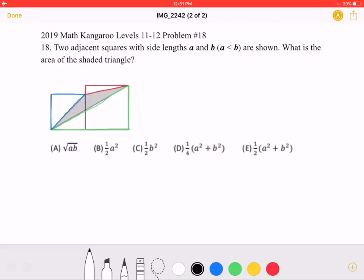To start, we have two squares, like it says in the problem. And one square has side lengths A and the other one B, where A is less than B.